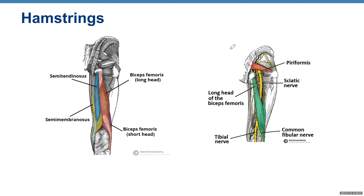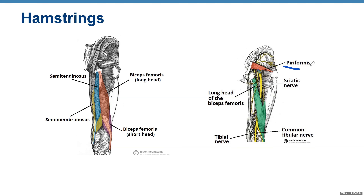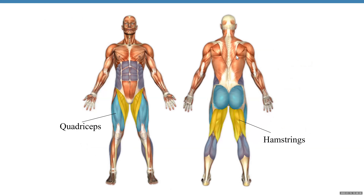Looking at the diagram from the posterior view: on the lateral side you have biceps femoris, semimembranosus shown in yellow, and semitendinosus on top. Just underneath your gluteus maximus, you will find the biggest nerve in your body — the sciatic nerve — which comes out underneath the piriformis muscle. The diagram also shows the anterior compartment with quadriceps and the posterior compartment with hamstrings.